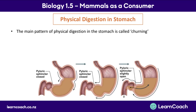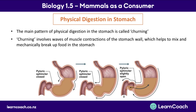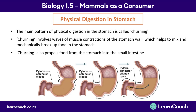Moving on to physical digestion in the stomach — the main pattern here is called churning, which involves waves of muscle contractions of the stomach wall. This helps to mix up and mechanically break up any food in the stomach, as seen in this example where the muscle contractions of the stomach walls cause the contents to get mixed and broken up. Churning also helps to move food from the stomach into the next part of the digestive system, the small intestine.